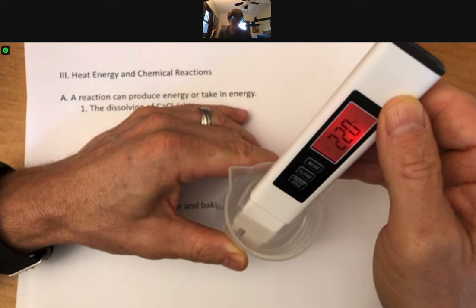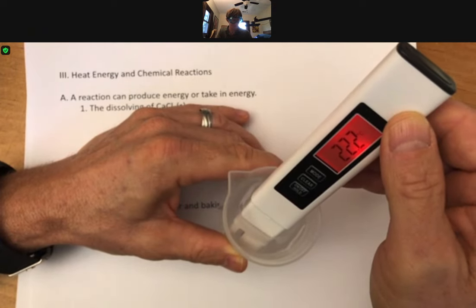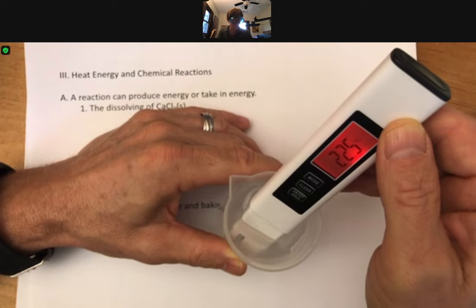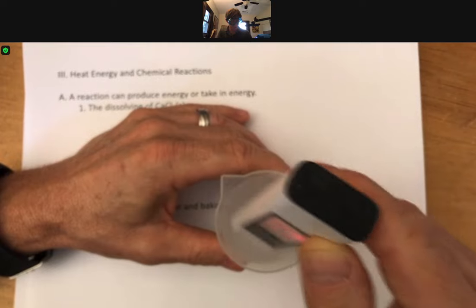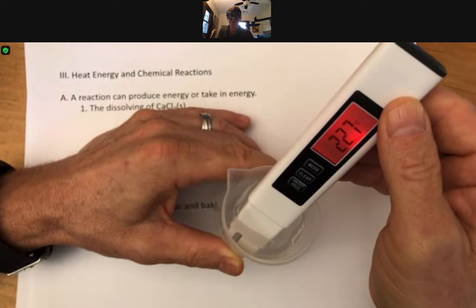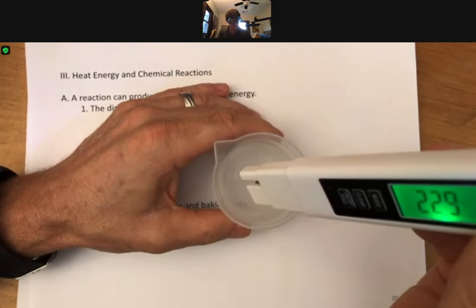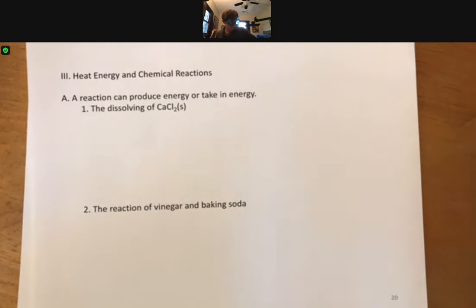What is happening is that the dissolving reaction gives off energy, and that makes the solution, the water with the calcium chloride dissolved in it, go up in temperature. Mix it up a little more. Temperature goes up, two or three degrees already. Let's take that out, set it down, dry it off.